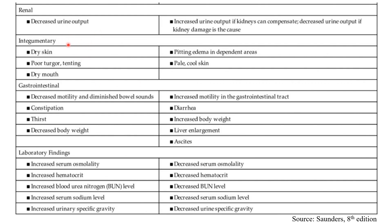In fluid volume deficit, there is decreased urine output. In fluid volume excess, there is increased urine output. Regarding skin: in fluid volume deficit, you can see that the skin is dehydrated — pale, cool skin.